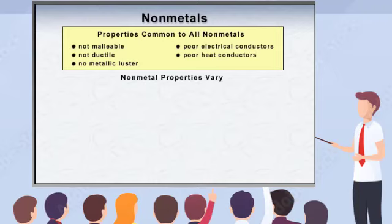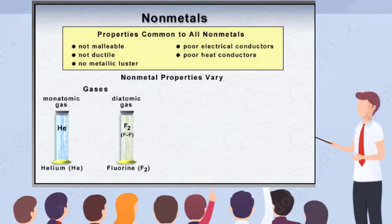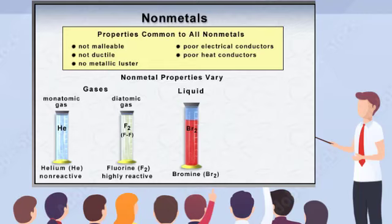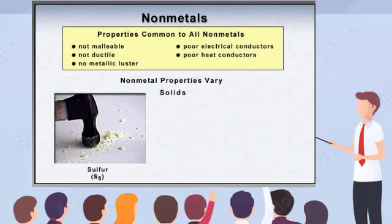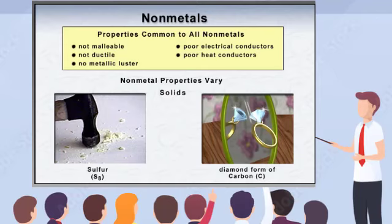Non-metals vary widely in their properties and reactivity. Some non-metals, such as helium, exist as a gas comprised of single atoms. Other non-metals, such as fluorine, exist as gases comprised of diatomic molecules, meaning two atoms are bonded together. Helium is extremely non-reactive, while elemental fluorine reacts with many elements, including other fluorine molecules. Elemental bromine is a liquid at room temperature, while other non-metals such as sulfur are soft solids. Sulfur crumbles when hammered, but the solid diamond form of carbon is the hardest natural substance known.